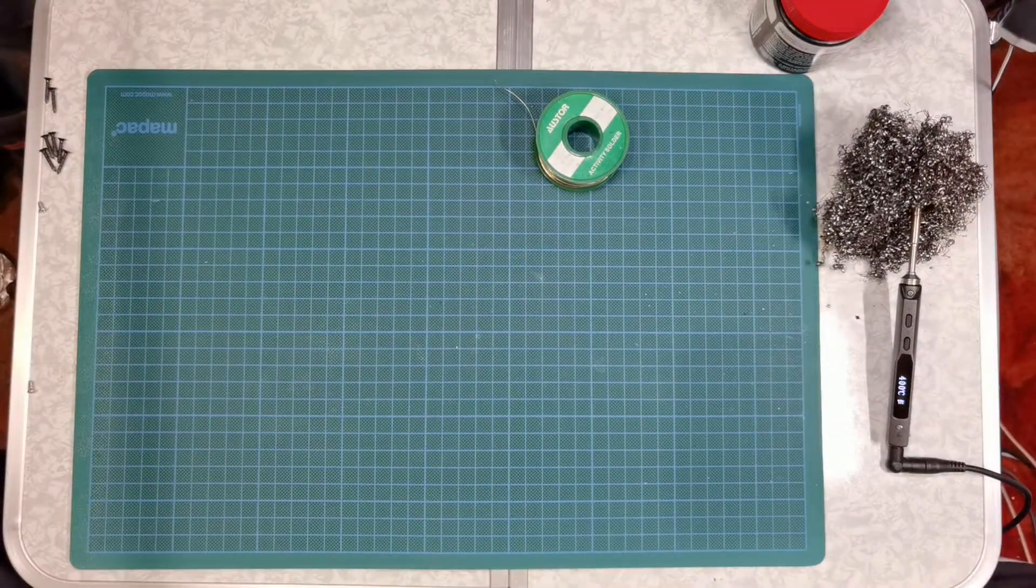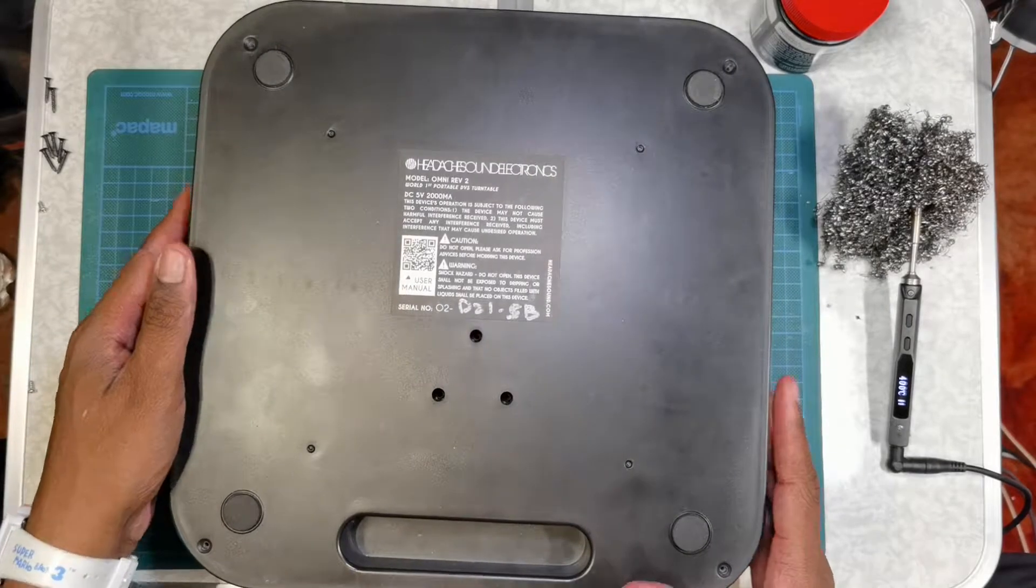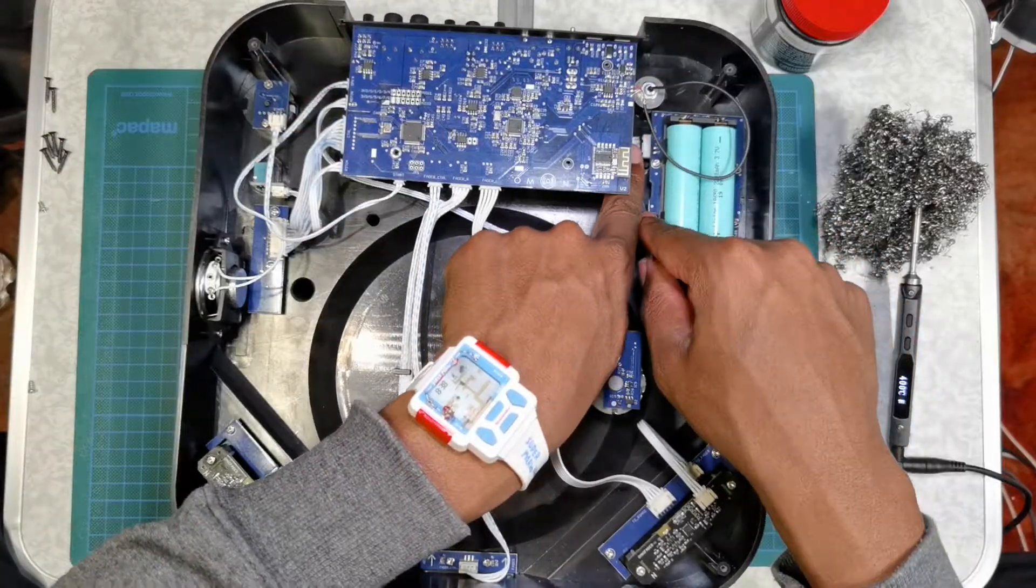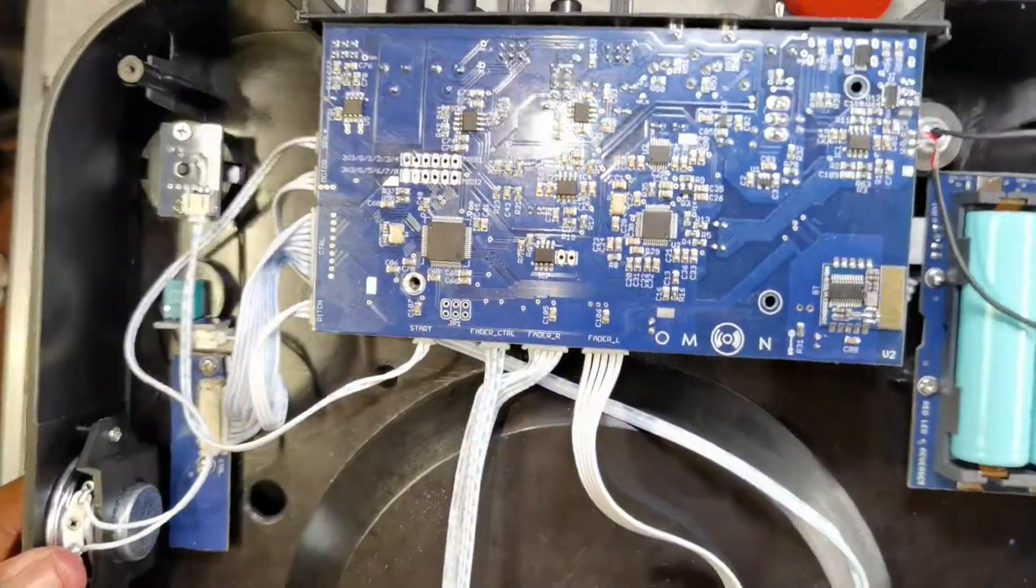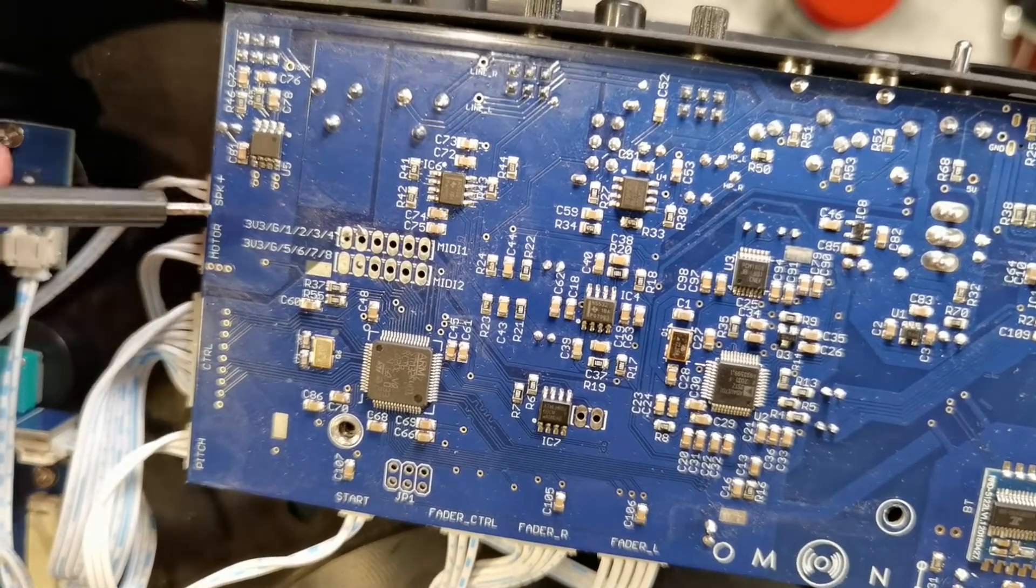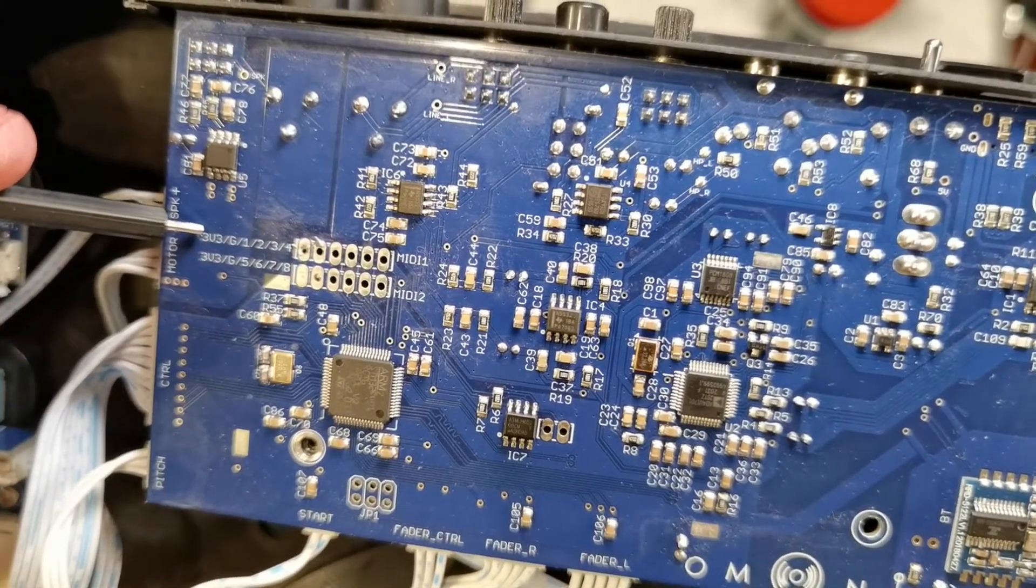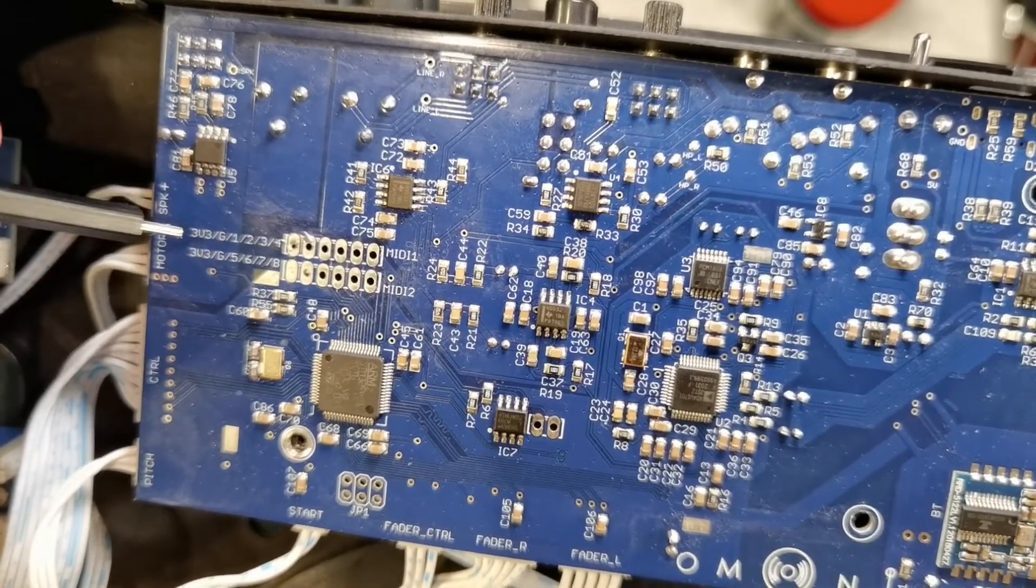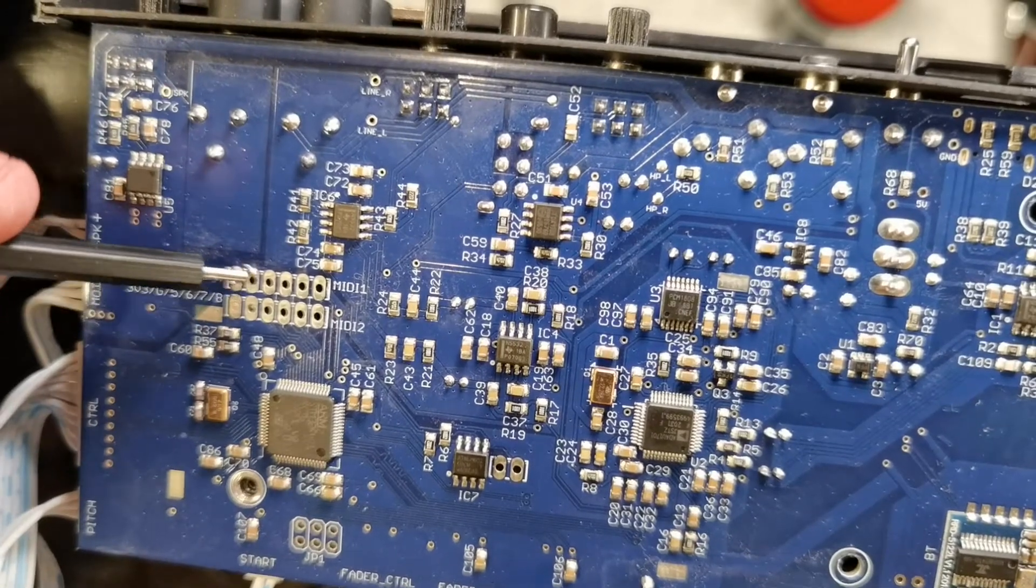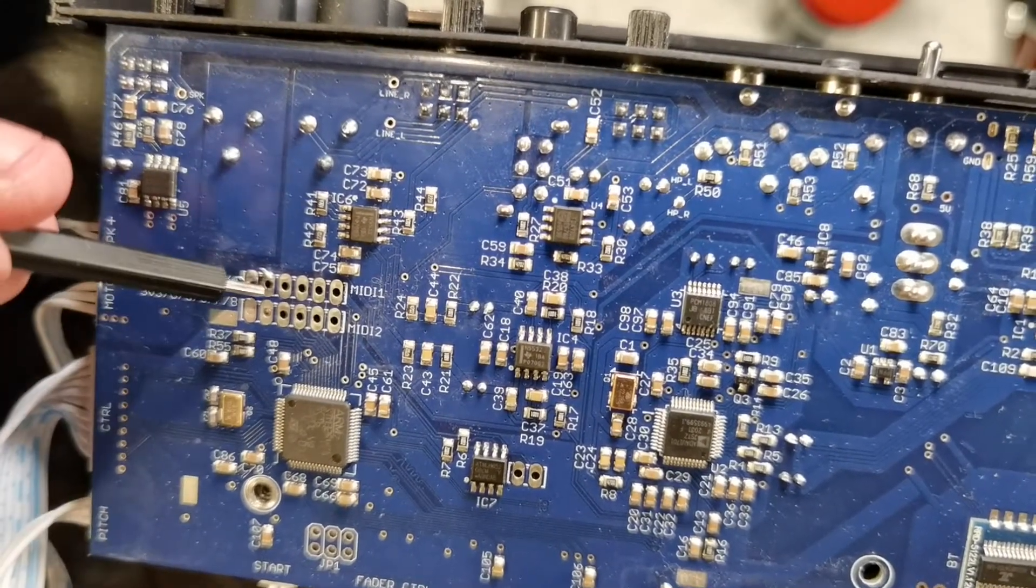So now we are going to solder the step up converter onto the circuit board. I've already unscrewed everything. And when you're taking this out, make sure you disconnect the battery cable. So this is the important section of the circuit board. It has a legend written next to it which explains what each of these connection points are. We've got a 3.3 volt connection and a ground connection.